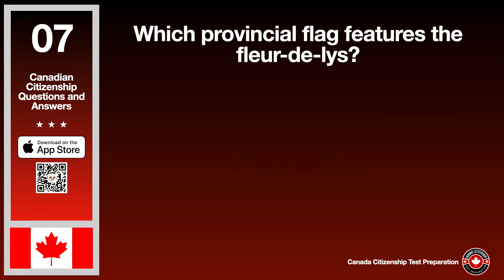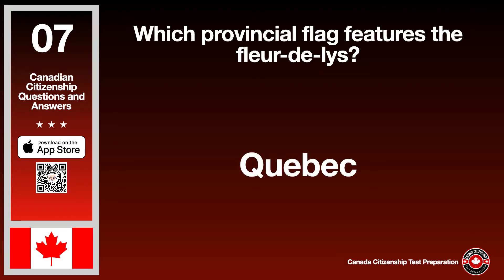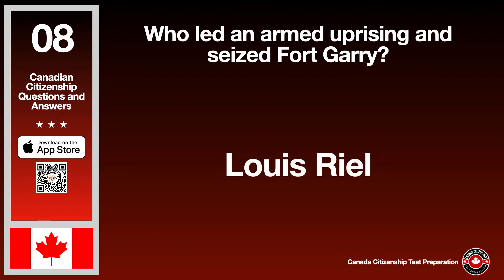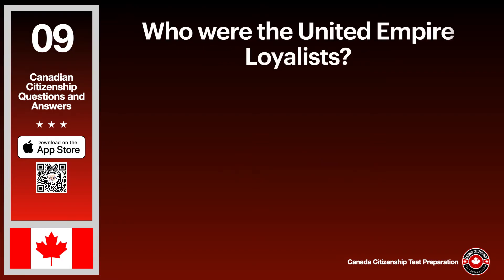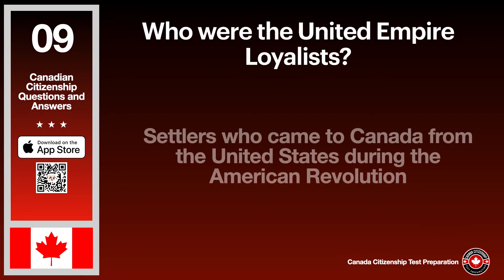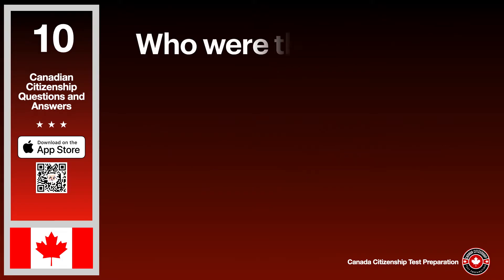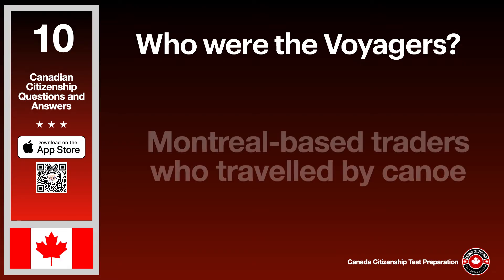Which provincial flag features the fleur-de-lis? The answer is Quebec. Who led an armed uprising and seized Fort Garry? The answer is Louis Riel. Who were the United Empire Loyalists? The answer is settlers who came to Canada from the United States during the American Revolution. Who were the voyageurs? The answer is Montreal-based traders who traveled by canoe.